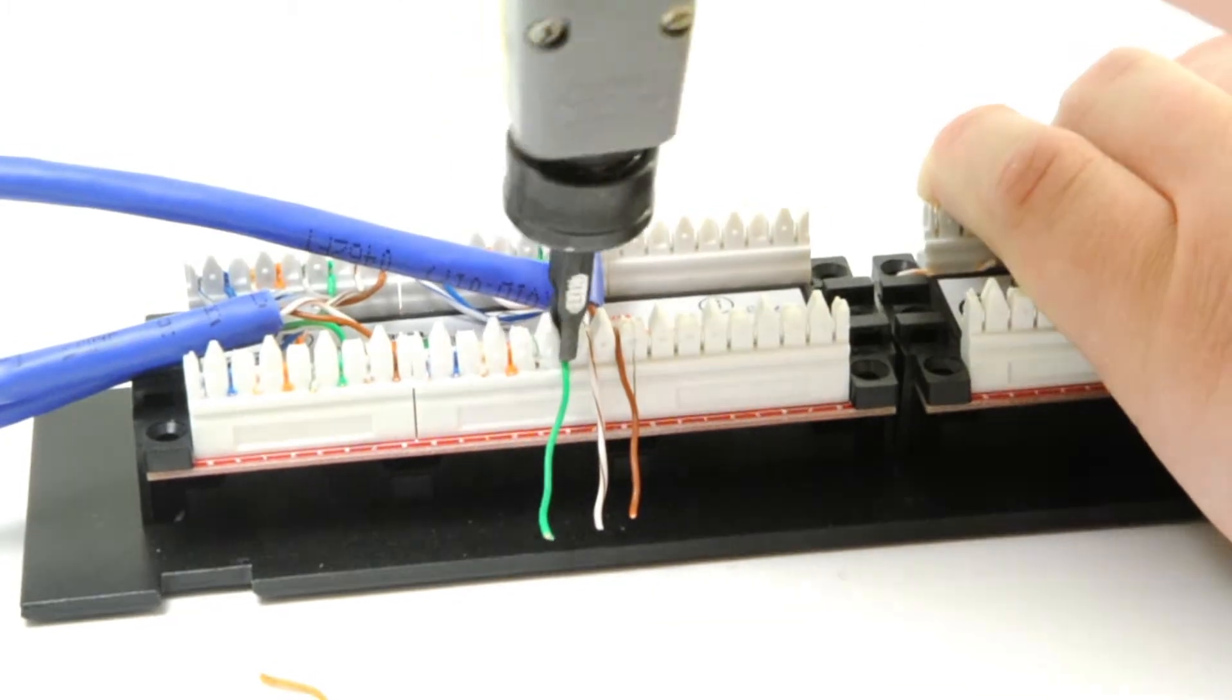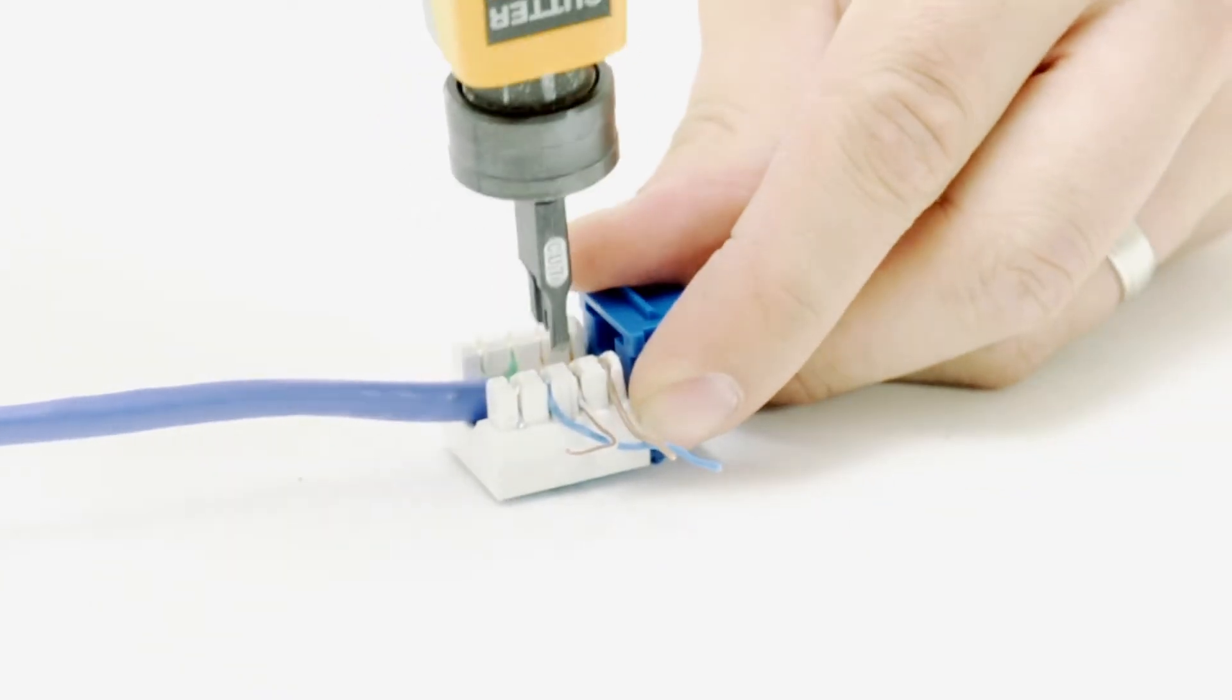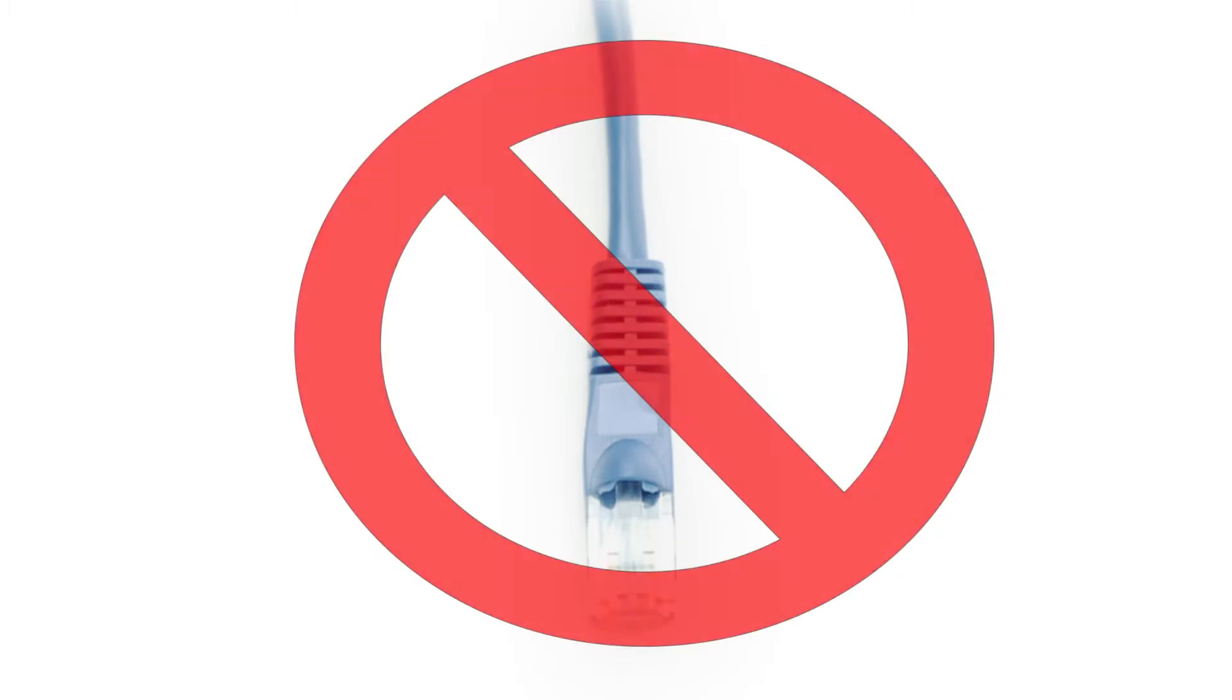Unlike stranded cable, Solid CAT6 can be punched down to jacks or patch panels. It is not recommended to be used as a patch cable.